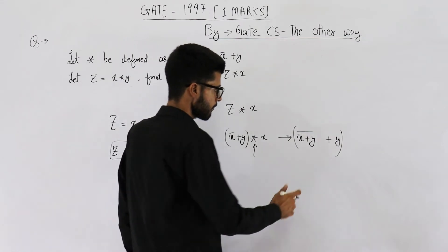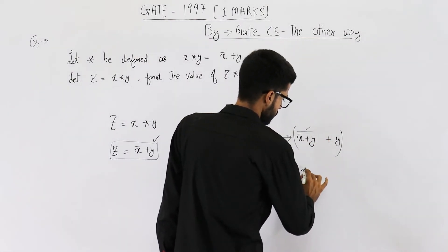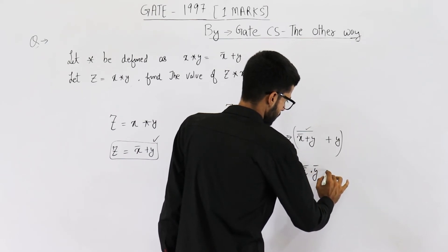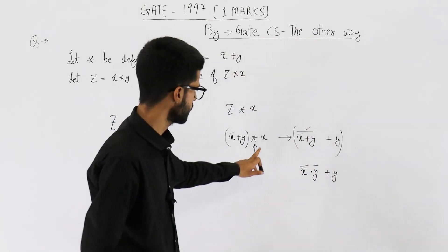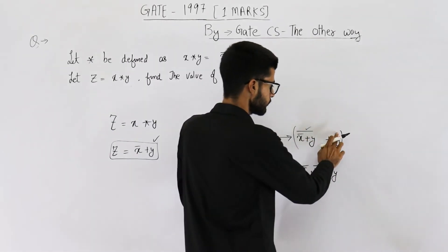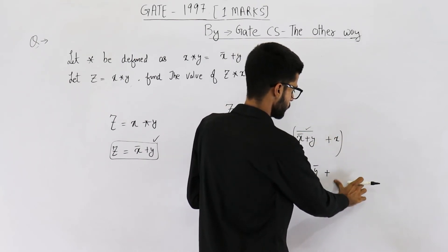So this will become x double complement dot y complement... sorry, this one is plus x. So here it will be plus x, here also it will be plus x.